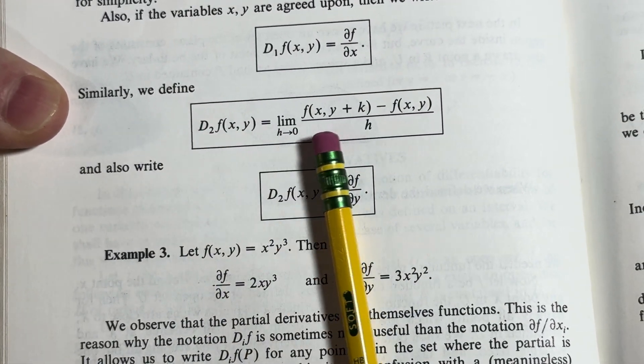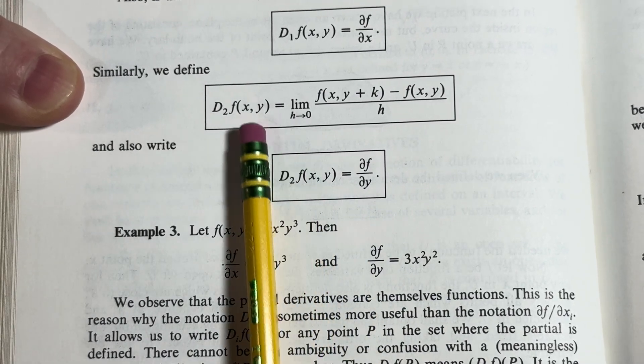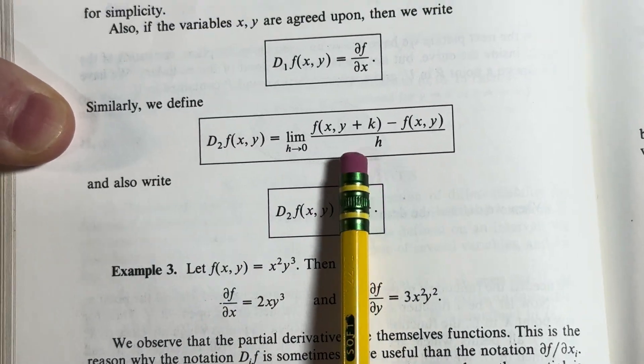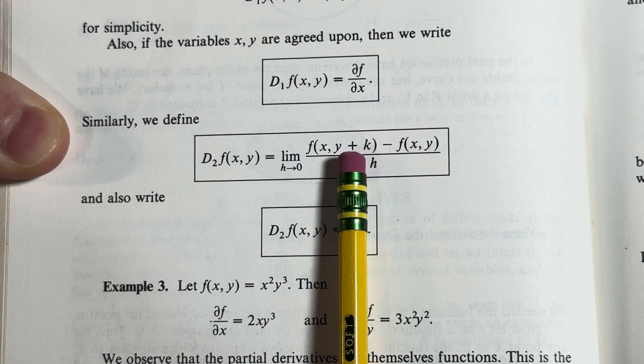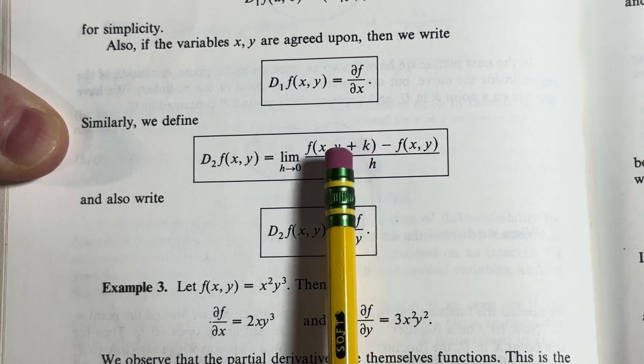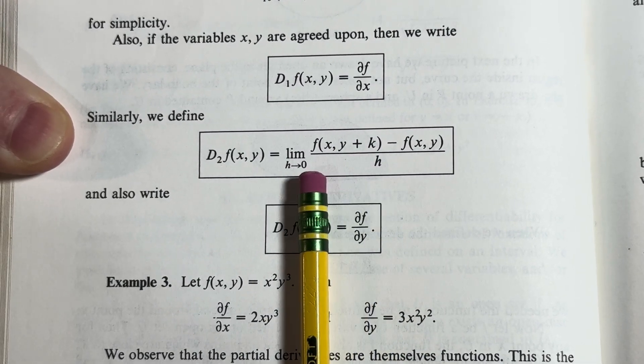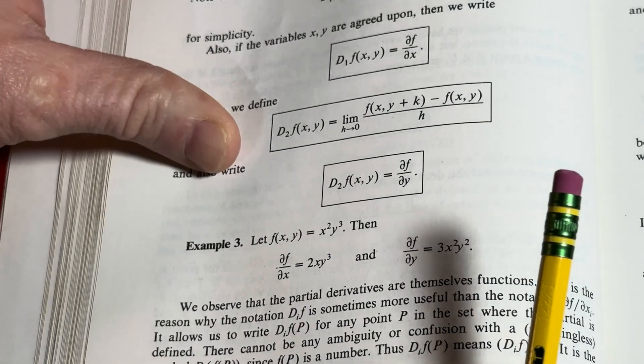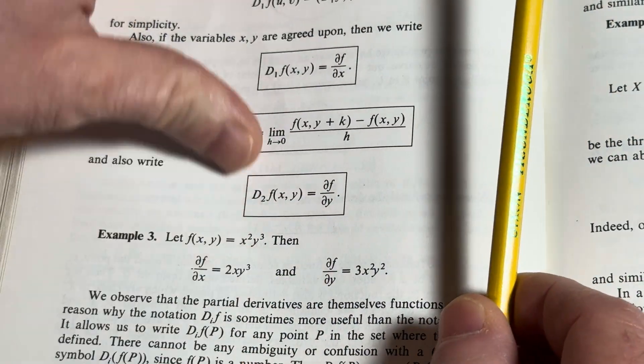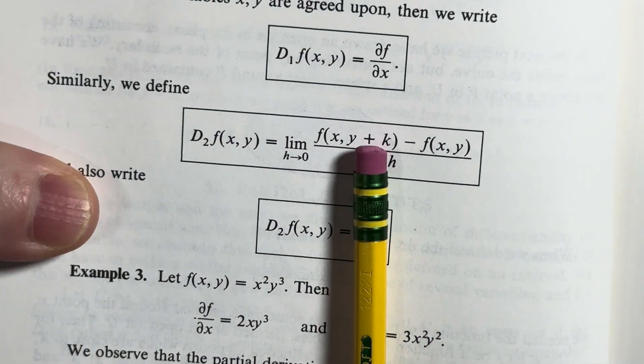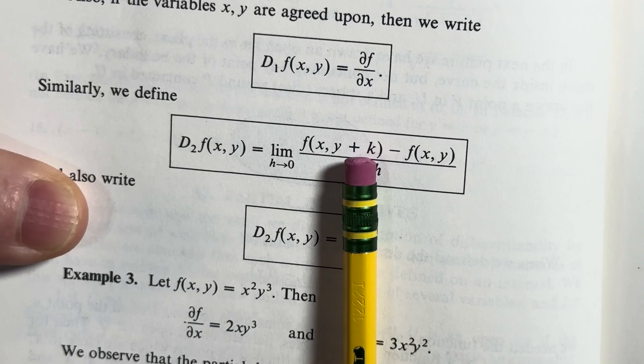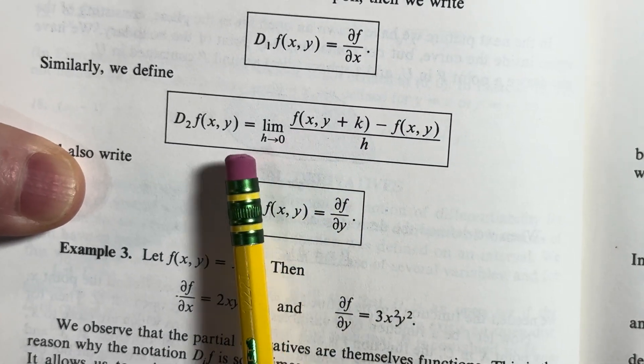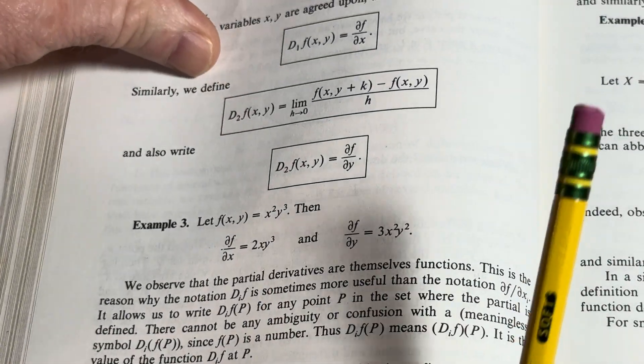Similarly, we can define this expression here. So and then here's where the subscript is 2. Notice that now you're adding a number to the k, to the y, rather adding k here. Before... Actually, that's a typo. That should be an h. Okay. That should be an h. Or it should be as k approaches 0 because that term has to approach 0.